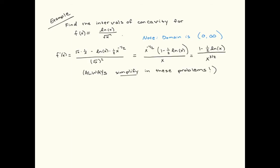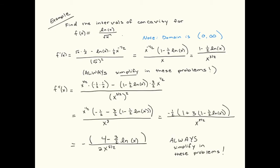Concavity has to do with the second derivative, so we need to get the second derivative. First we get the first derivative using the quotient rule — we've done the quotient rule many times, so pause the video and make sure you can follow every step. Because we're taking the second derivative, you must simplify the first derivative as much as possible. We also use the quotient rule to take the derivative of the first derivative to get the second derivative. It looks messy initially, so we must simplify.